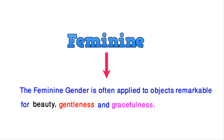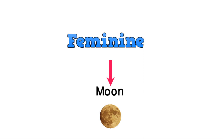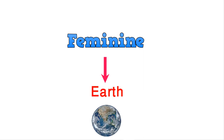Ladies are shown representing beauty through soap and fashion ads. The moon is also associated with beauty, so we put 'moon' in the feminine gender category. Similarly, the earth — we put 'earth' in the feminine gender category.